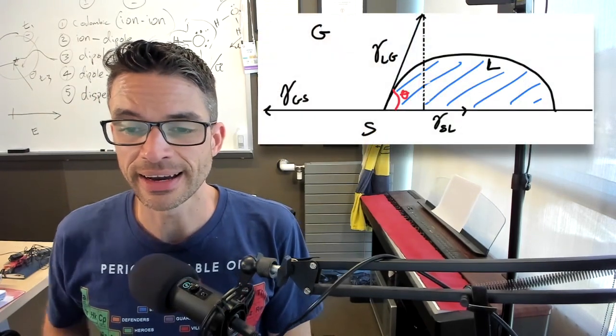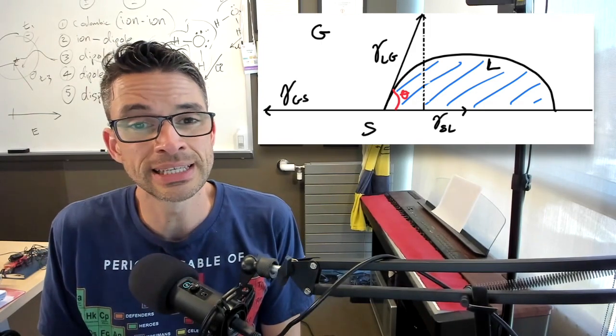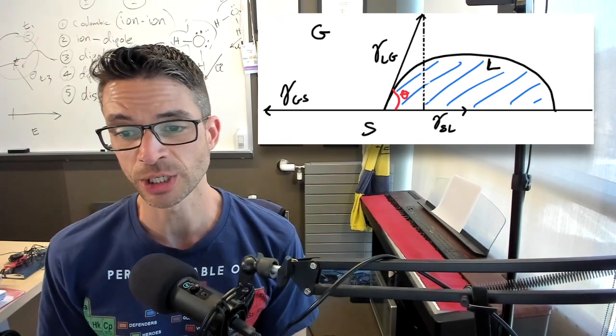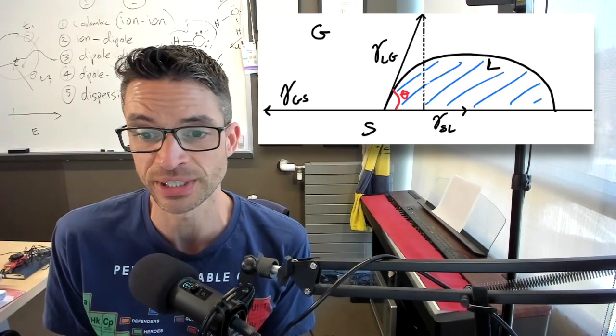So this is a diagram of the triple interface. So anytime you have a droplet, it is a function of the equilibrium between all of the different surface forces, all the different interfacial tensions.